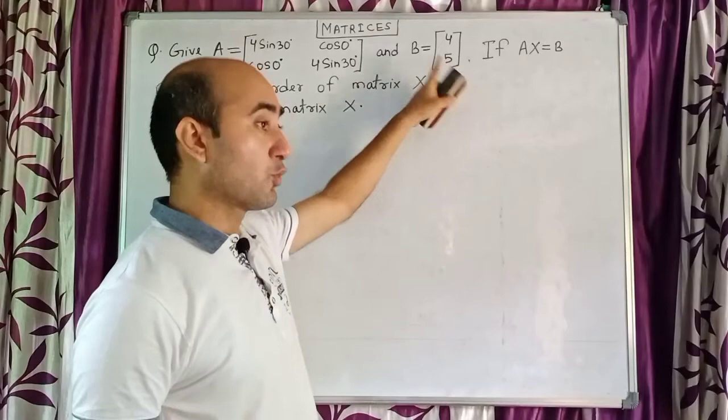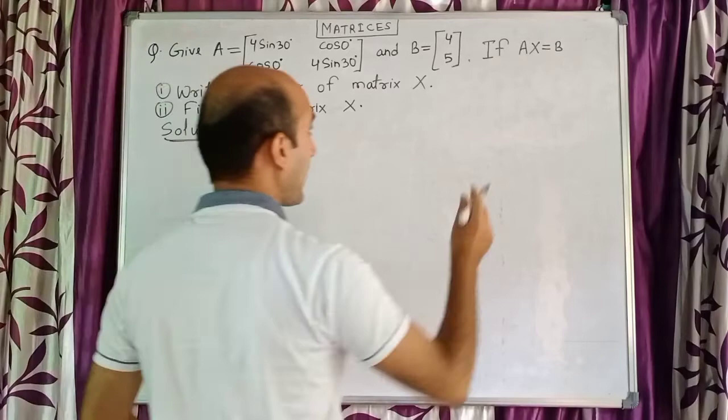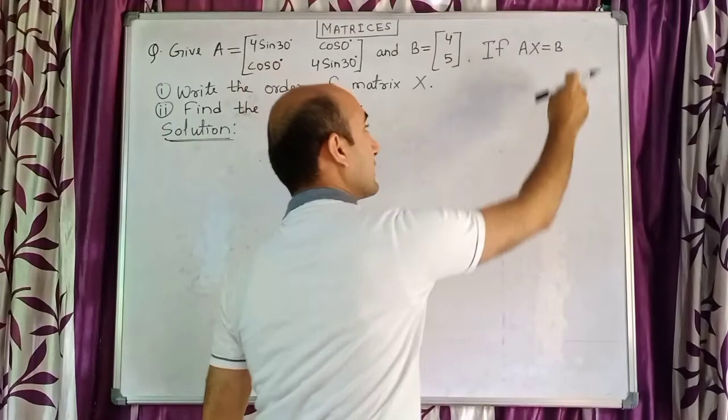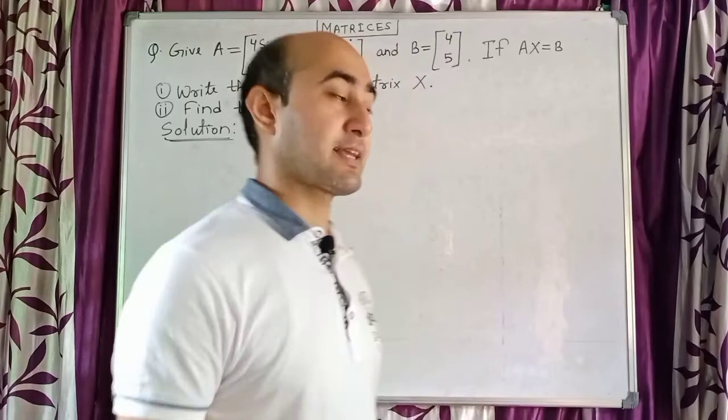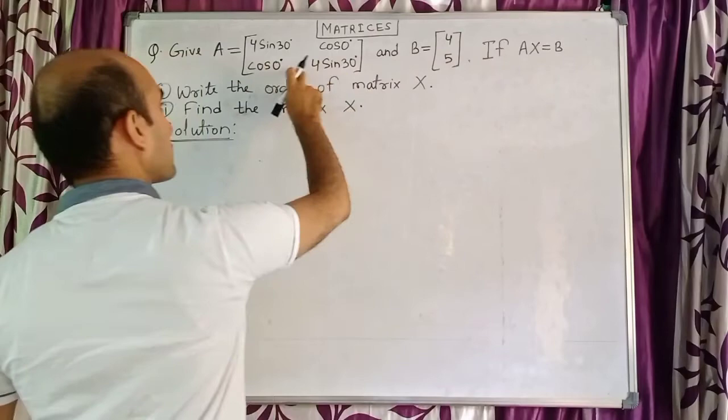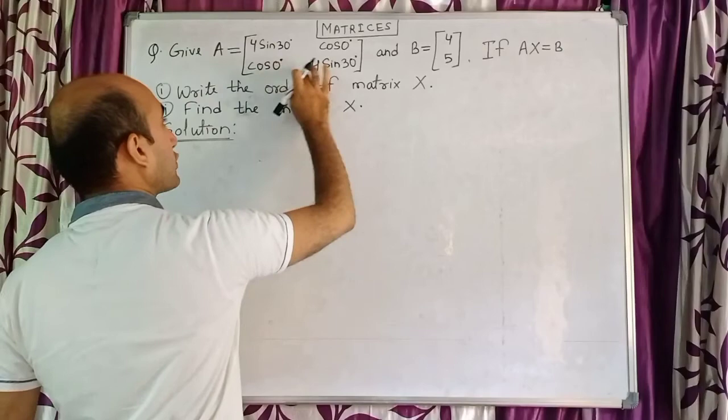Matrix B has 2 rows and 1 column, so its order is 2×1. Now, the relation given is AX = B. You have to find the order of matrix X, that is, the size of matrix X. Here A is 2×2 size and B is 2×1 size.